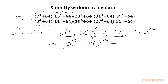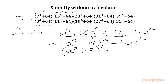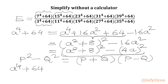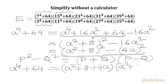Then we have 16a² which we can write as (a² + 8)², minus (4a)². Now here we can use the difference of two squares identity: p² − q² = (p + q)(p − q). So we can write a⁴ + 64 equal to (a² + 8 + 4a)(a² + 8 − 4a).